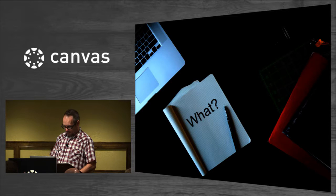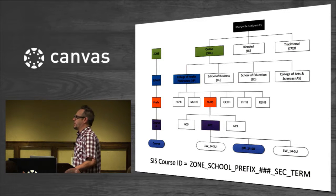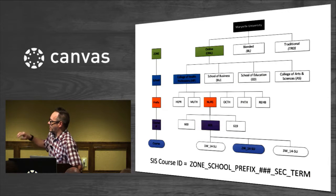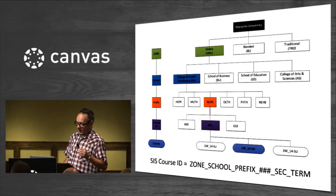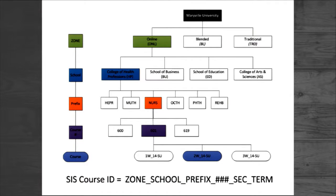This is a condensed overview of Maryville's subaccount hierarchy. We have four layers of subaccounts between the root account and the courses: what we call the zone, then we go down to school, then the prefix level, and then the course number level, with courses underneath that. At Webster we had an extra layer between the school and the prefix because we had departments represented in the hierarchy. I've done this with two different SISs and two different structures, and so far it's working really well.